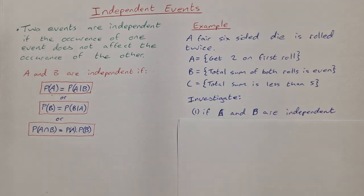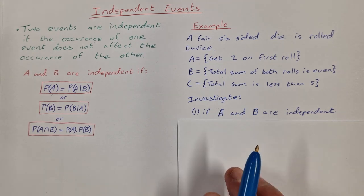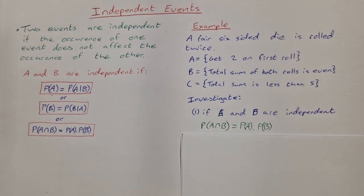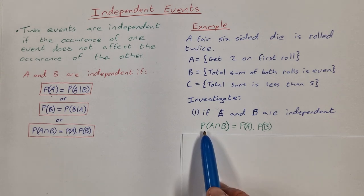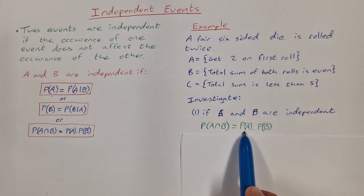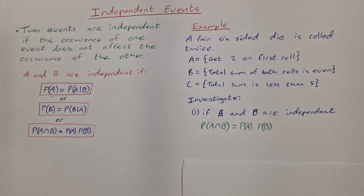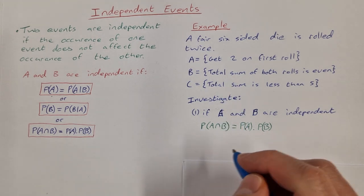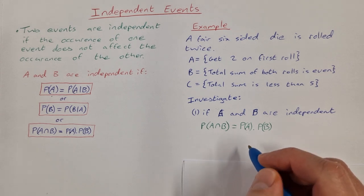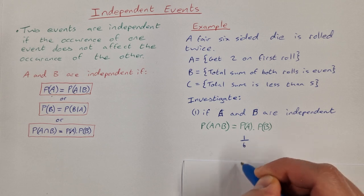We're asked to investigate, first of all, if events A and B are independent. If events A and B are independent, then the probability of A intersection B is equal to the probability of A times the probability of B. The probability of A — getting a 2 on the first roll — is 1 over 6, since there's one chance of getting 2 out of 6.